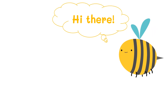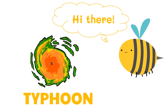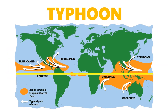In this video we'll be talking about typhoons and how they develop. You may have wondered what is the difference between a typhoon, a hurricane, and a cyclone. Let's take a look at this map to answer that question. Hurricanes, cyclones, and typhoons are all types of tropical storms — they are all basically the same thing, but are given different names depending on where they appear. Hurricanes are tropical storms that form over the North Atlantic Ocean and Northeast Pacific. Cyclones are formed over the South Pacific and Indian Ocean, and typhoons are formed over the Northwest Pacific Ocean.